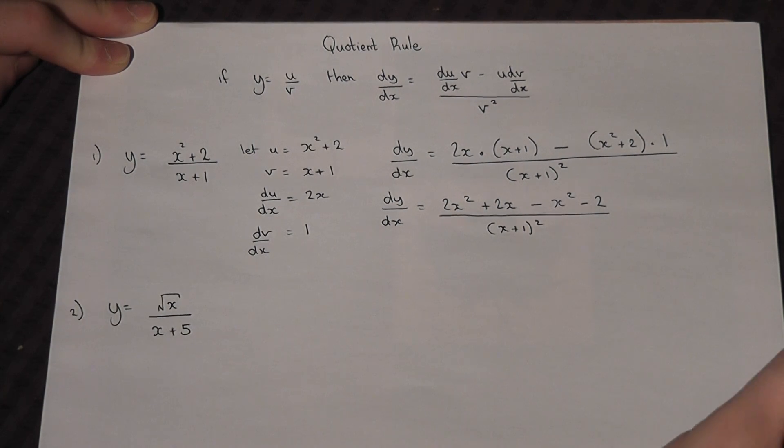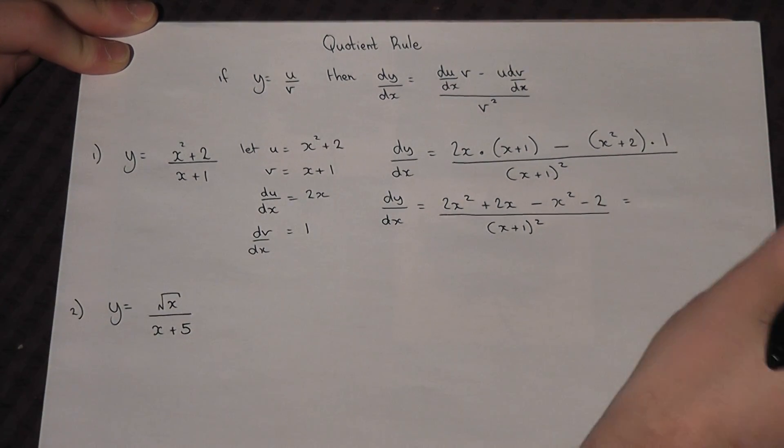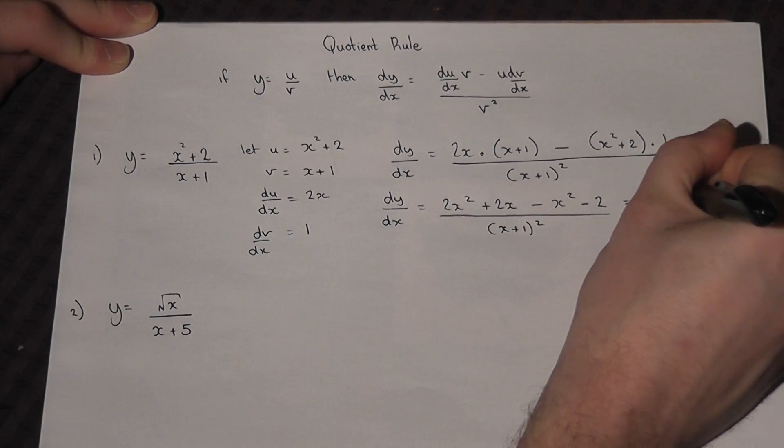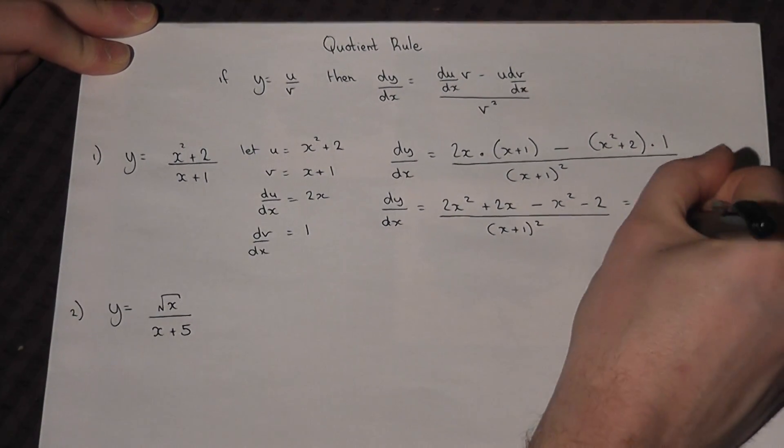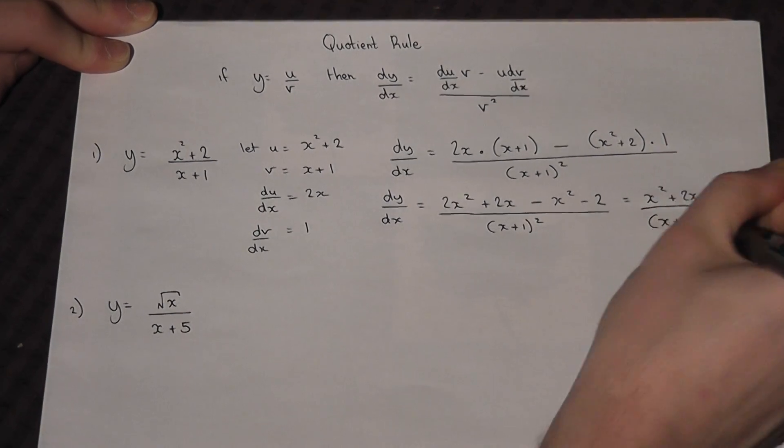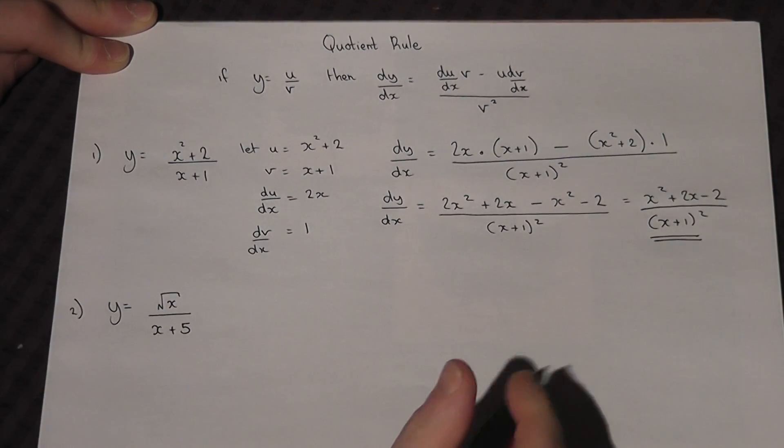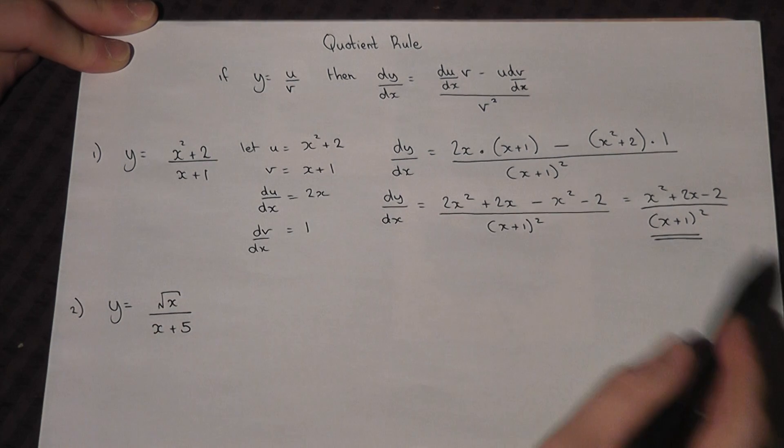We can make it simpler, so we get 2x squared, take away x squared, so we get x squared plus 2x minus 2, all over x plus 1 squared. So that is the fraction differentiated.